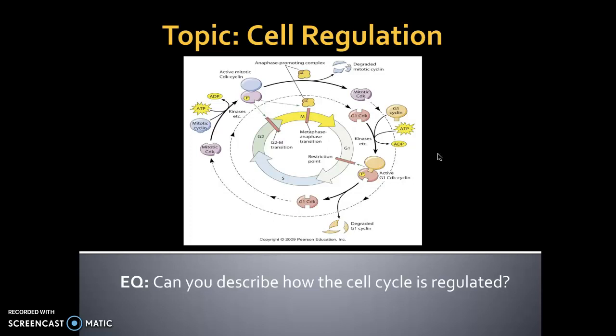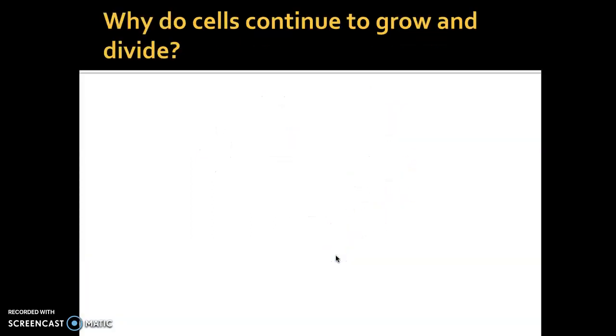Today we're going to be talking about cell regulation — how we try to control the rate at which cellular reproduction occurs. The essential question is: can you describe how the cell cycle is regulated? Not all of our cells go through this process at the same rate. For example, muscle and nerve cells never go through mitosis after they mature, liver cells divide maybe once per year, and skin and intestinal cells divide every few hours. We want to know why cells continue to grow and divide, sometimes at different rates — for instance, to repair or replace themselves when injured.